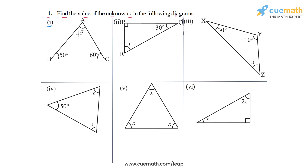In part 1 the three angles are x, 50 degrees, and 60 degrees. The sum of these three angles should be 180 degrees. So we can write x plus 50 degrees plus 60 degrees must be equal to 180 degrees.